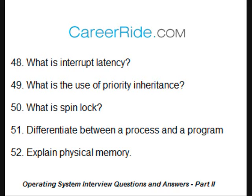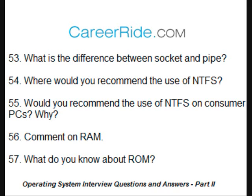Explain physical memory. Physical memory is the only memory that is directly accessible to the CPU. The CPU reads the instructions stored in physical memory and executes them continuously. The data being worked upon is also stored in physical memory in a uniform manner. What is the difference between a socket and a pipe? A socket is a part of the OSI model that enables communication between different layers, whereas pipes are used in processing in the CPU. Communication in a socket is bi-directional while it is unidirectional in pipes.